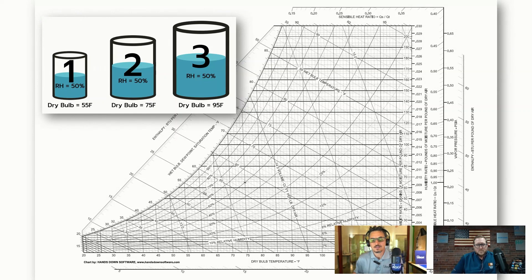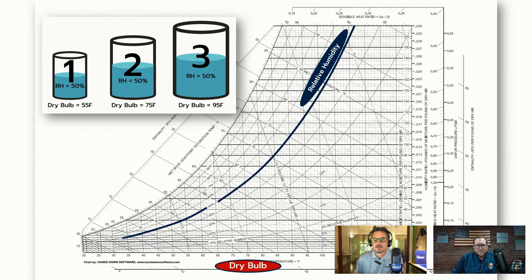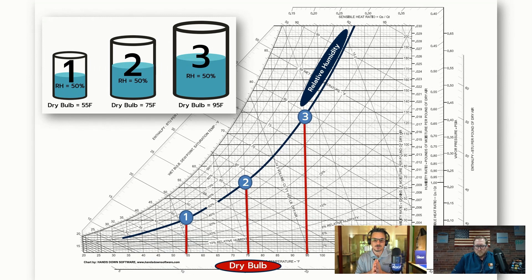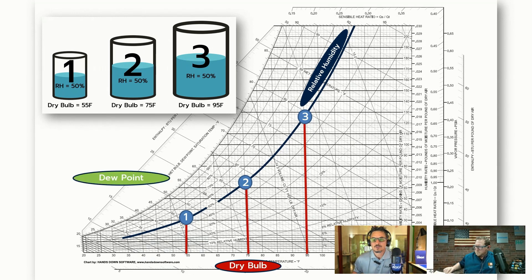We're going to illustrate that by plotting these on a psychrometric chart. We're going to take the 50% RH line, which is right here, and plot that against the dry bulb temperature of each of these containers. You'll see 55 degrees is here, 75 degrees is here, and 95 degrees is here. We'll put a little dot here to represent these containers. If you're familiar with psychrometrics — as we move up the chart, that's an increase in humidity, the actual amount of moisture in the air. You can see container three is much higher than one, of course, as we discussed.